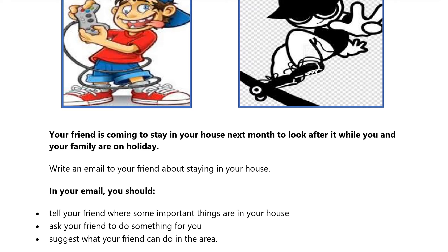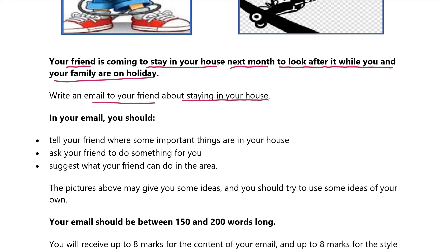Let's read the question. Your friend is coming to stay in your house next month to look after it while you and your family are on holiday. Write an email to your friend about staying in your house. In your email you should: number one, tell your friend where some important things are in your house — this is very important. Number two, ask your friend to do something for you. Number three, suggest what your friend can do in the area. We have got three bullet points in every email writing, and we need to cover them.